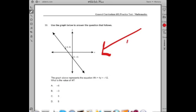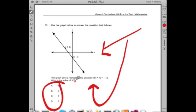When I actually look at the question here, it says the graph above represents the equation wx plus 4y equals minus 12. And then it gives me a series of values here and it says what is the value of w?